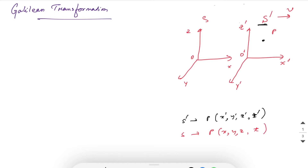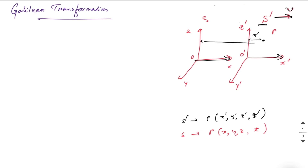As S' is moving along the x-axis, only the x coordinate will change as it moves. This distance from O' to P is x', and from O to P is x.